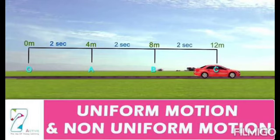Next comes periodic motion. When the same motion repeats itself after equal intervals of time, we call it periodic motion. For example, the pendulum repeats its path after one second. So we call that periodic motion.